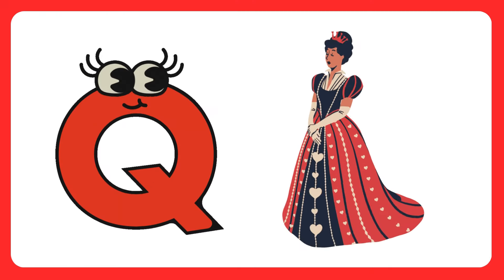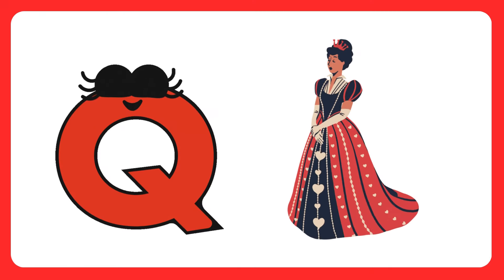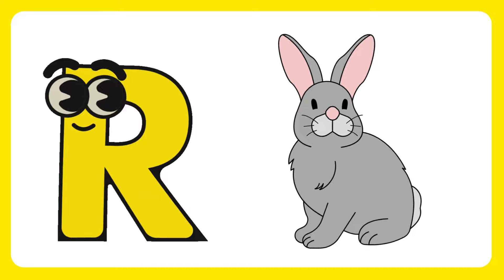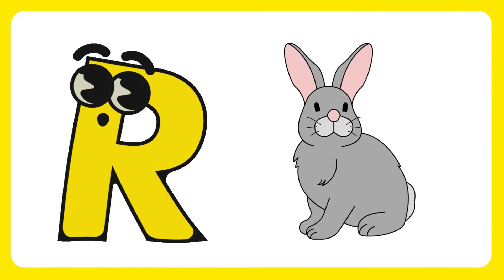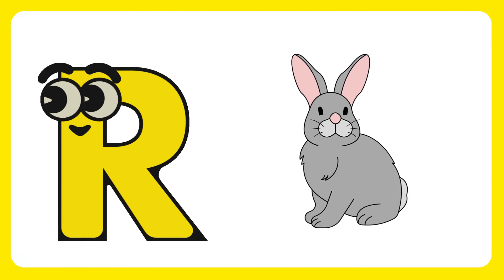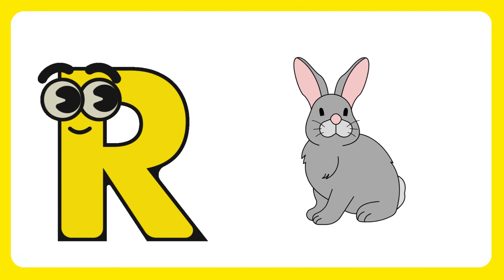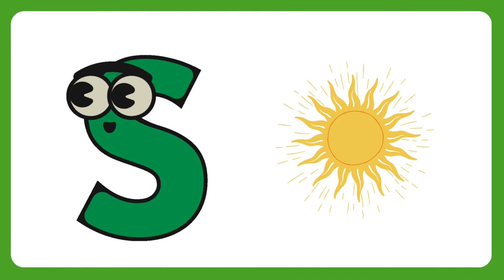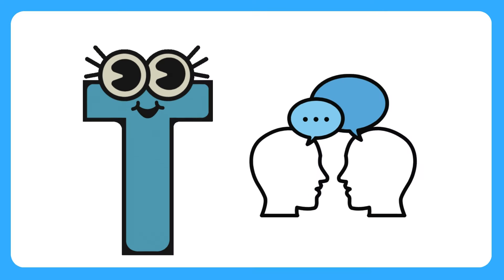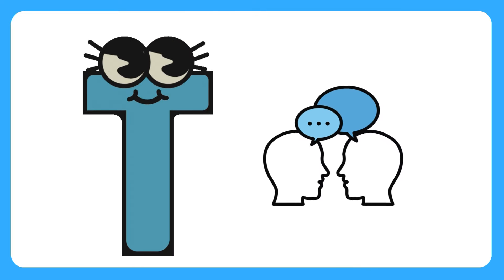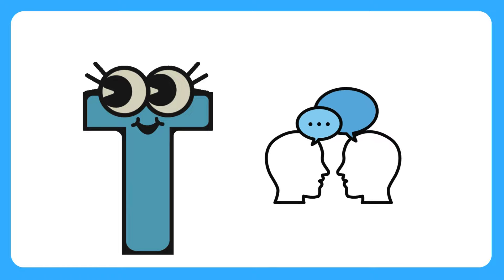Q is for queen, q-q-queen. R is for rabbit, r-r-rabbit. S is for sun, s-s-sun. T is for toad, t-t-toad.